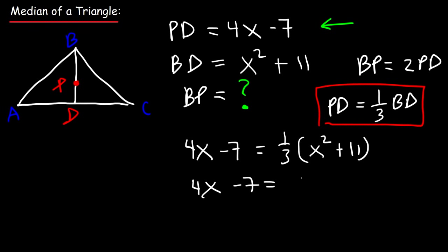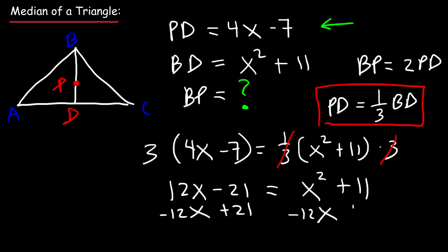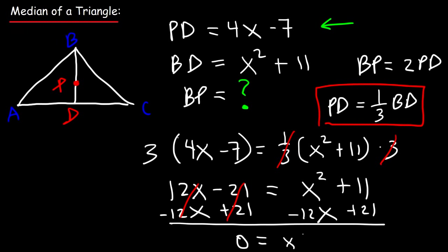We have a quadratic equation, so move everything to the right side by subtracting 12x and adding 21 to both sides. This gives 0 equals x squared minus 12x plus 32. We need two numbers that multiply to 32 and add to negative 12: those are negative 4 and negative 8.